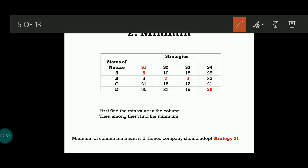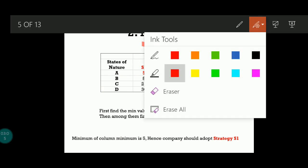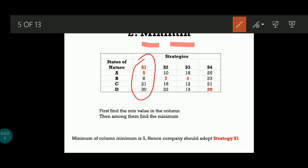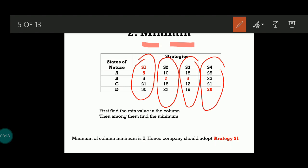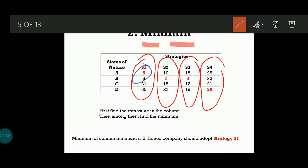Now we look at the minimin criterion. For minimin, you first find the minimum in each column, then from among those find the minimum number. In S1 the minimum value is 5, in S2 it is 7, in S3 it is 8, and in S4 the minimum value is 20. From among these four numbers — 5, 7, 8, 20 — which is the least? The least is 5.